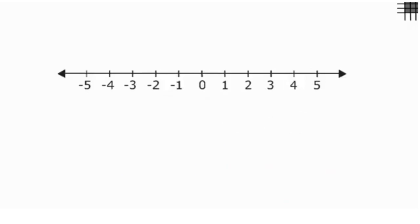This is the number line. We have zero in the middle, positive integers on the right and negative integers on the left.